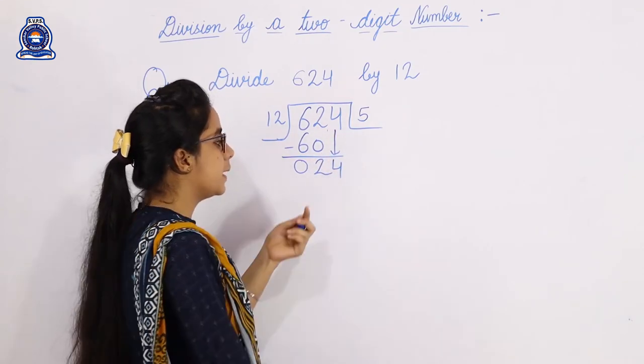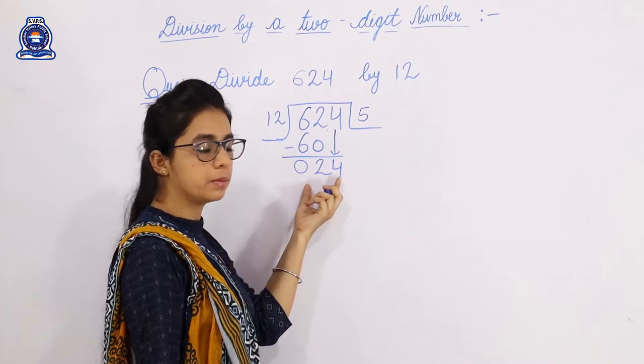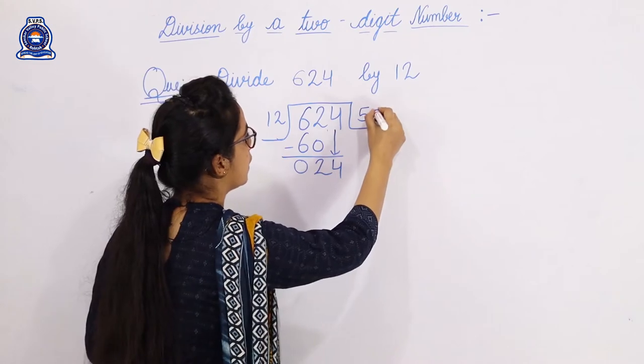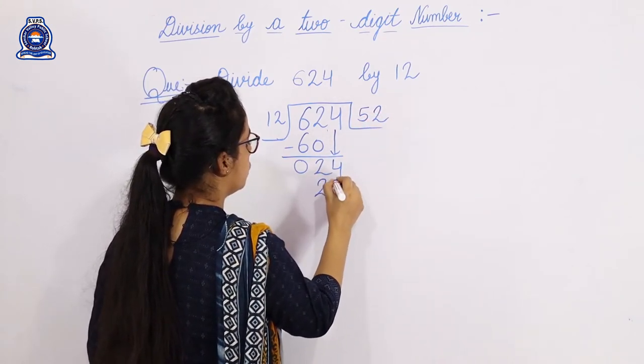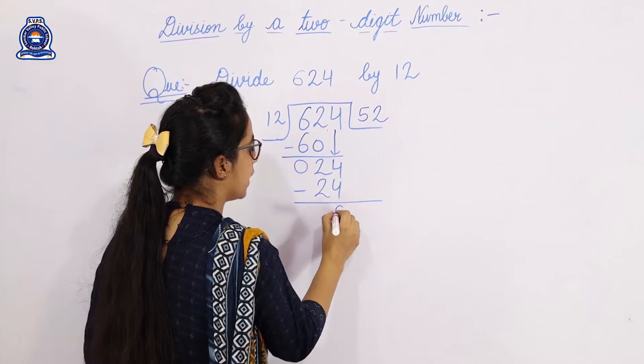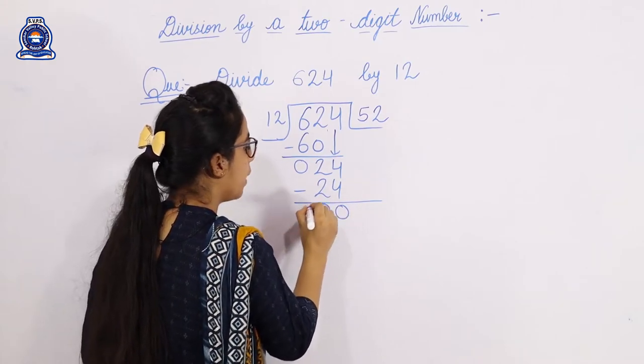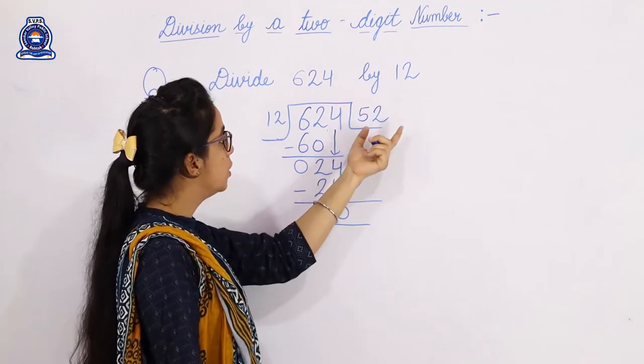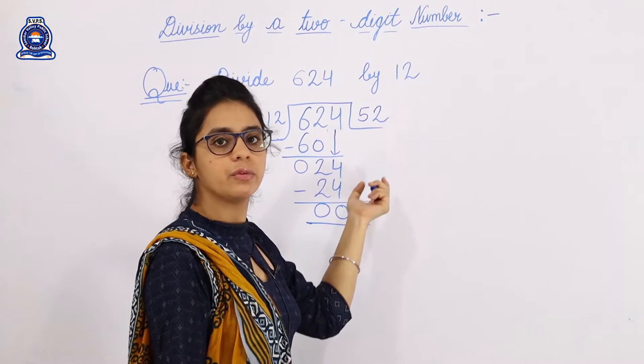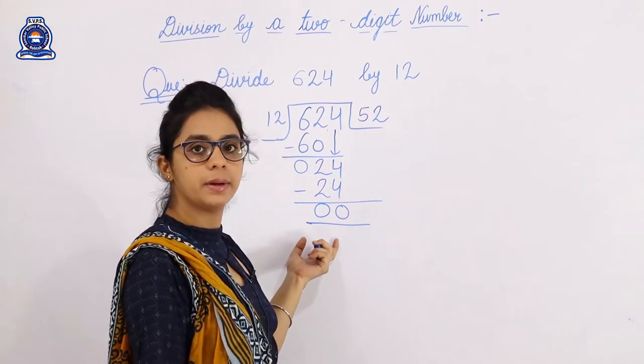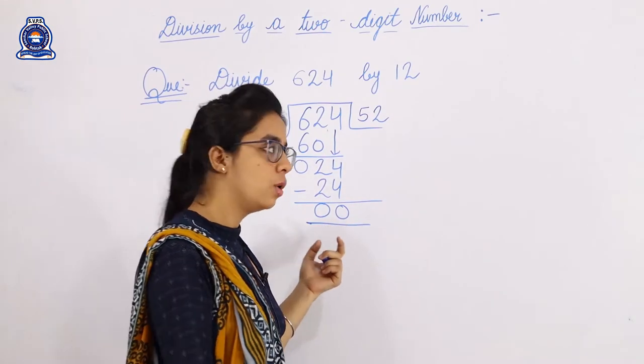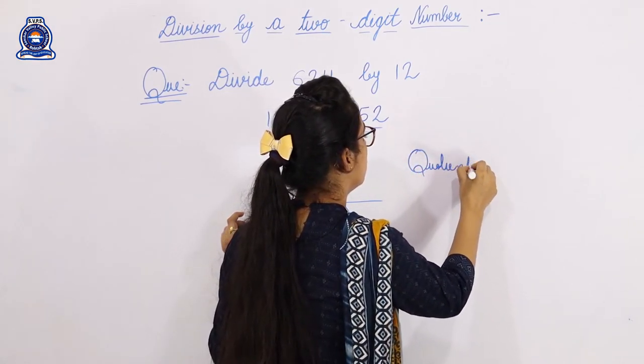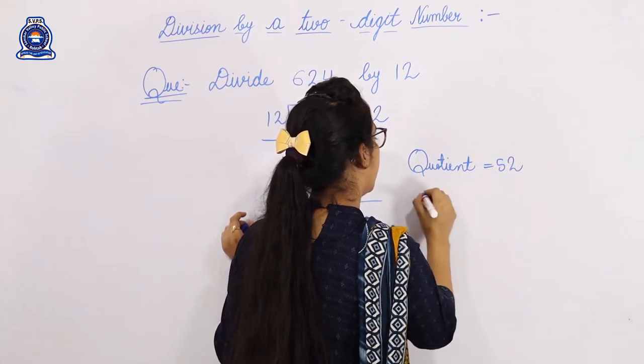We have 62 divided by what? First 6, then 62. Using the 12 table: 12 fives are 60. Then 12 twos are 24, so we write 2. 12 twos are 24, then we subtract 4 minus 4 equals 0, 2 minus 2 equals 0. Our quotient is 52 and remainder is 0.